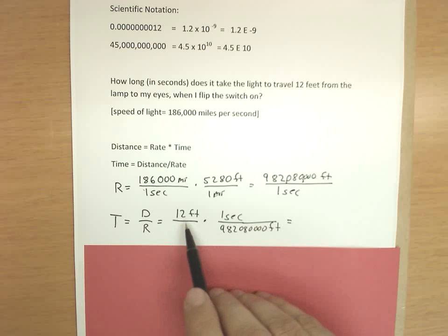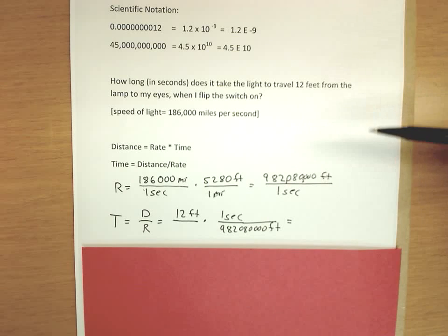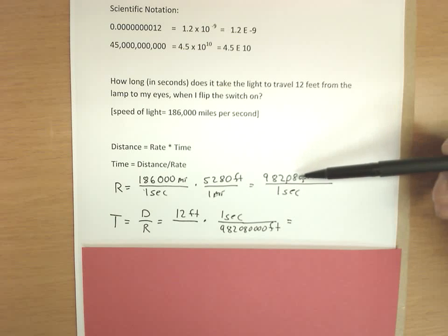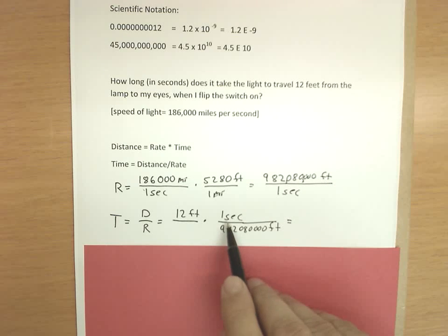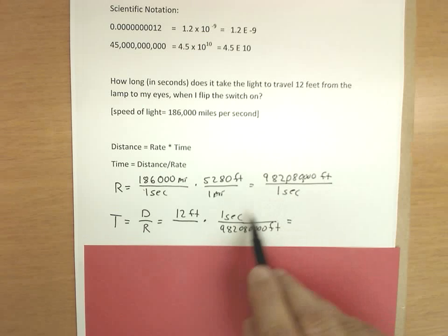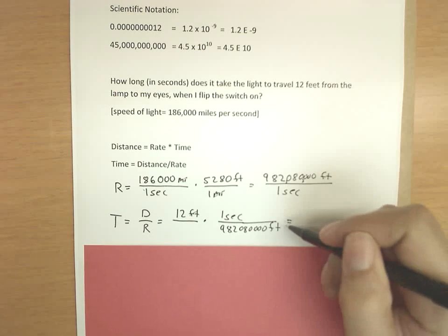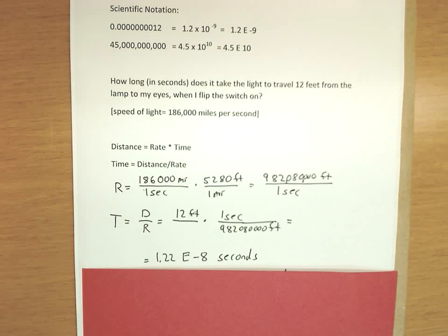But another way we could look at this is we're given 12 feet, and we want to convert these feet to seconds. And we have the relationship that one second is the same as 982,080,000 feet. So I'm going to simply convert my 12 feet into seconds using the relationship we just found. So I put one second on top and 982,080,000 feet on the bottom. And now the feet are canceled, and my answer will be in terms of seconds.